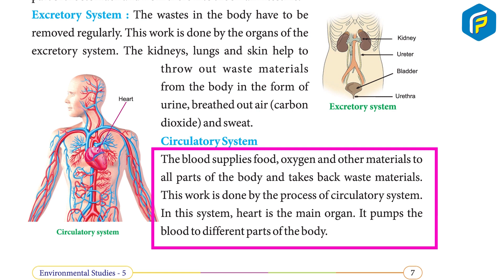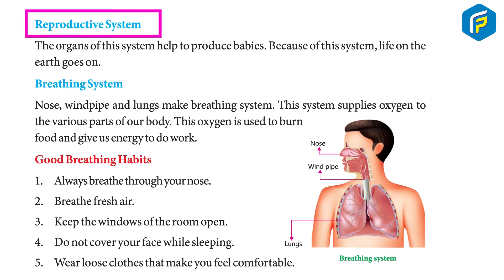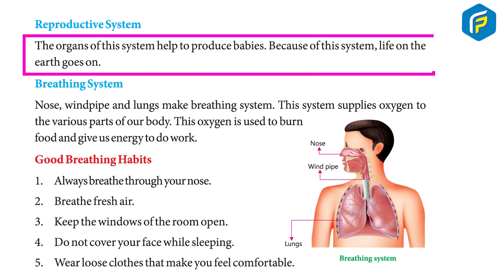The circulatory system: blood supplies food, oxygen, and other materials to all parts of the body and takes back waste materials. This is done by the circulatory system. In this system, the heart is the main organ — it pumps blood to different parts of the body.